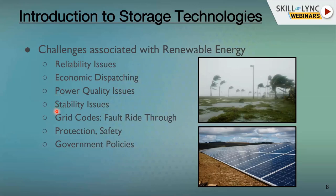Stability issues are also important — the critical parameters that must be maintained constant throughout the operation of any stable power system are voltage and frequency. We cannot allow the system voltage and frequency to fluctuate, as it will hamper the smooth operation of the entire power system. With a large amount of renewable energy sources present due to their intermittent nature, there will be a lot of variation in voltage and frequency at the points of interconnection with the power system.